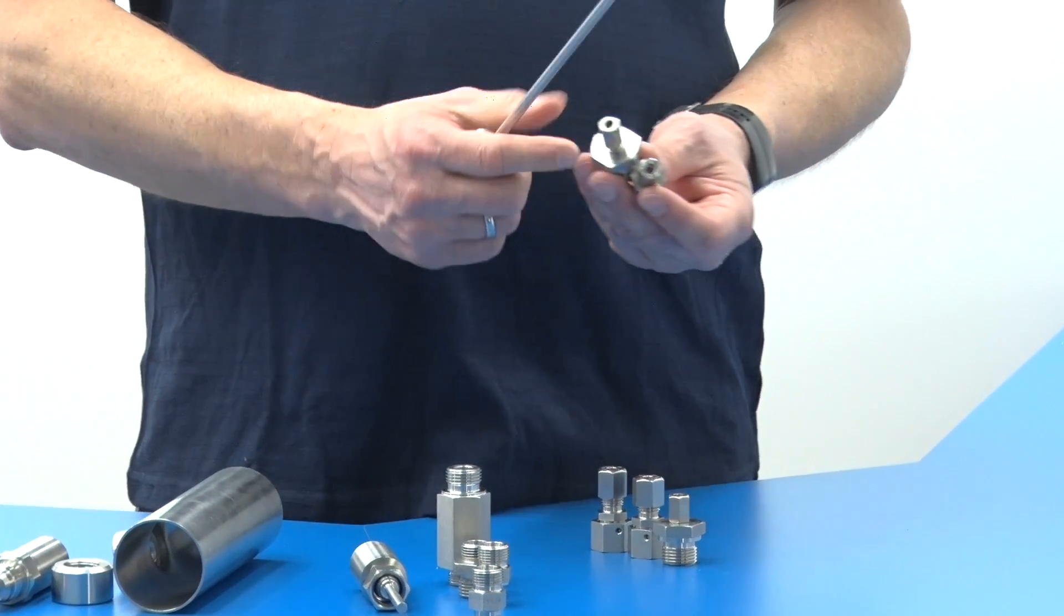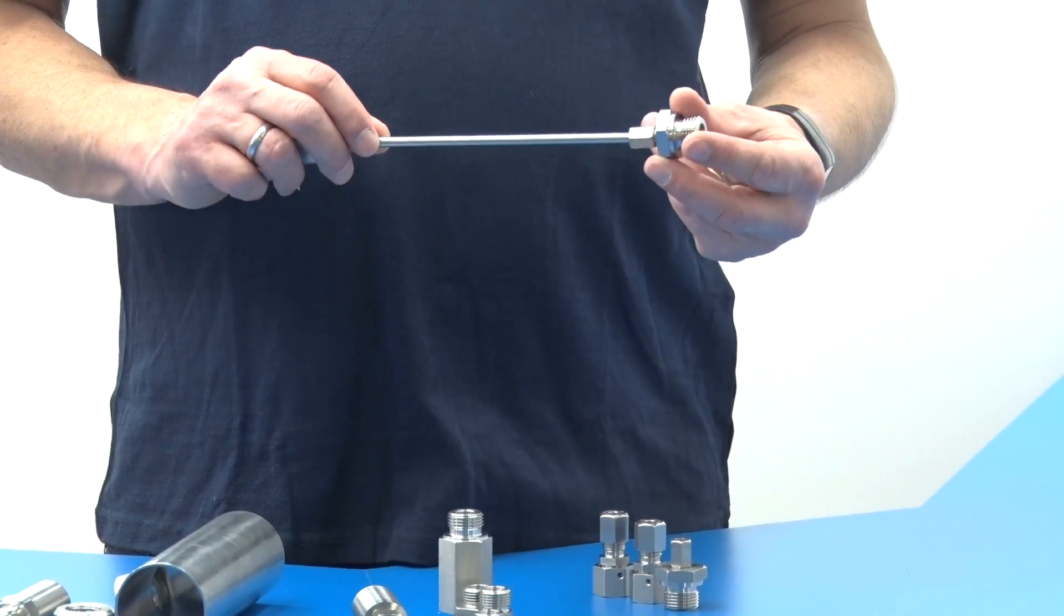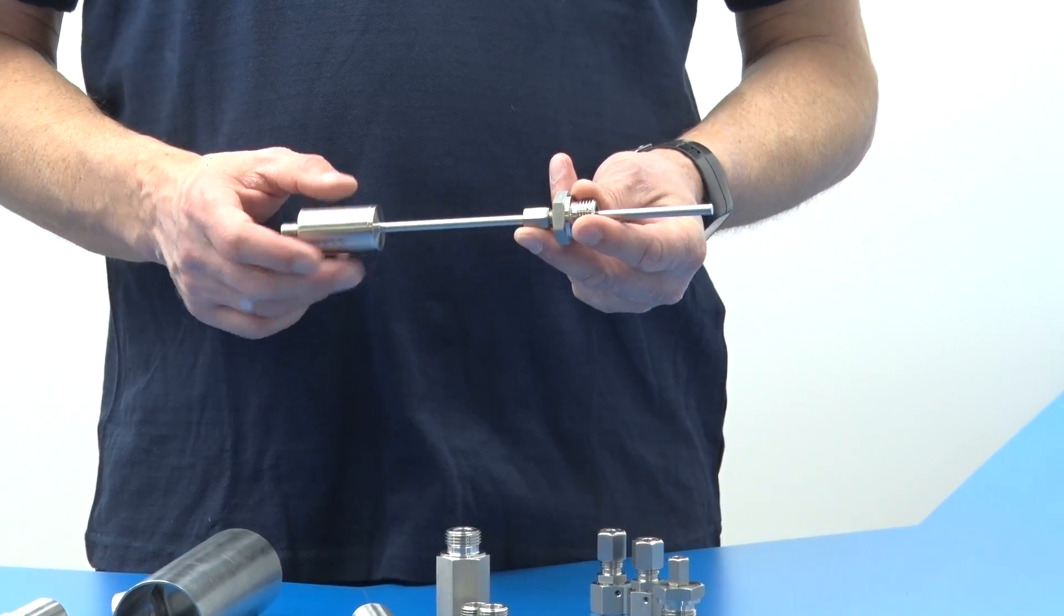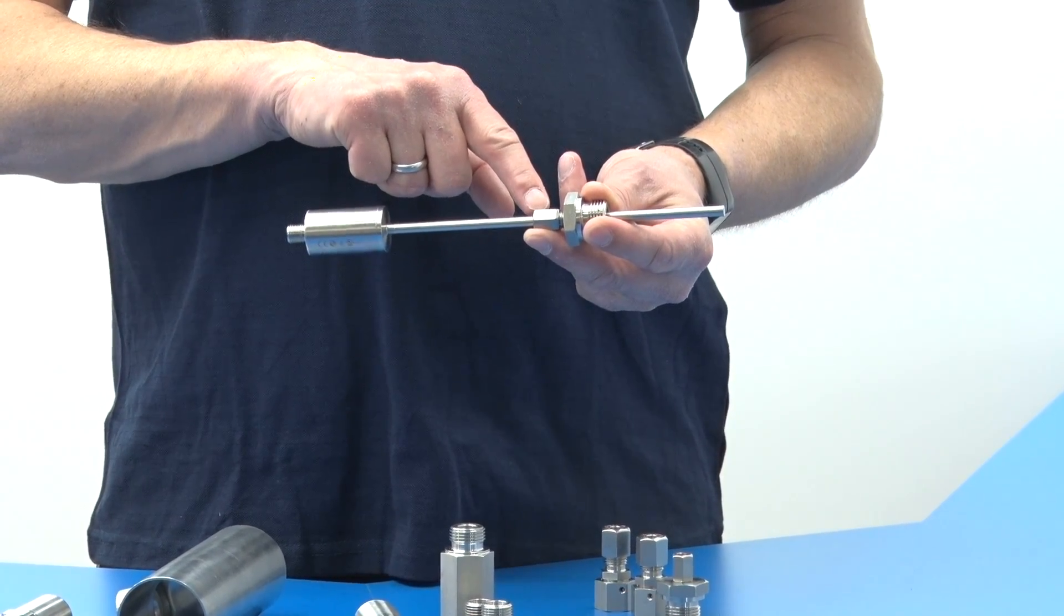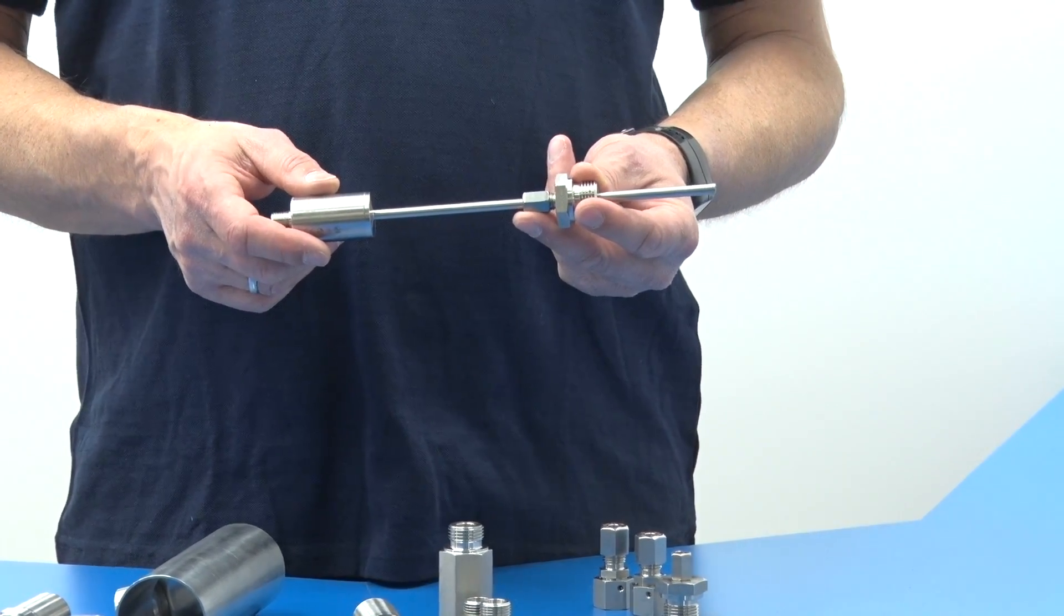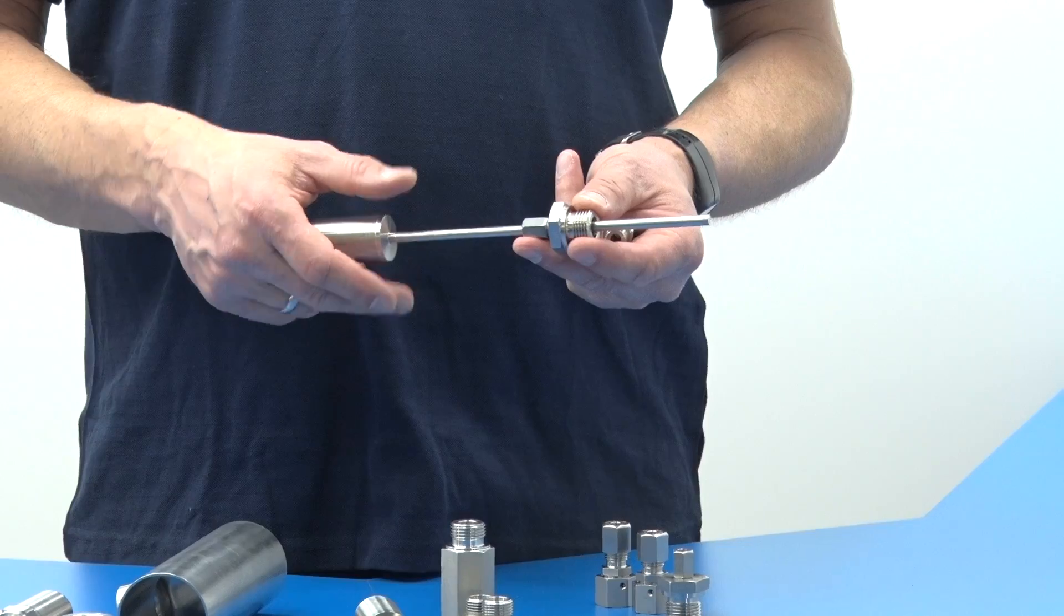Simply slide on the screw adapter, tighten it and the connection is safe up to 100-bar. However, bear in mind that sensor and adapter are permanently connected and cannot be separated. In high-pressure applications, this is the connection to choose.